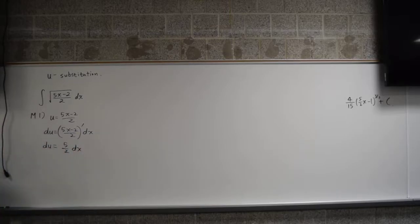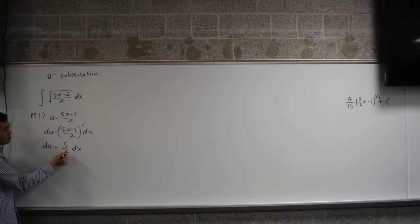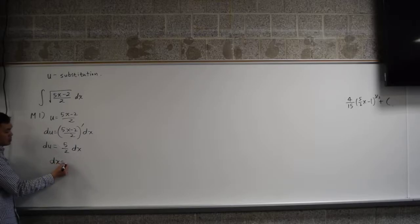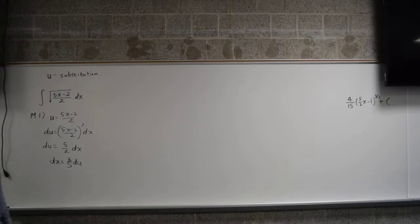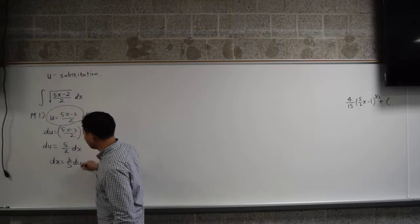And then you multiply by 2 over 5 on both sides, so you solve for dx. So dx is 2 over 5 times du, or you can say it's the reciprocal. Now we have everything we need. We have this and that.